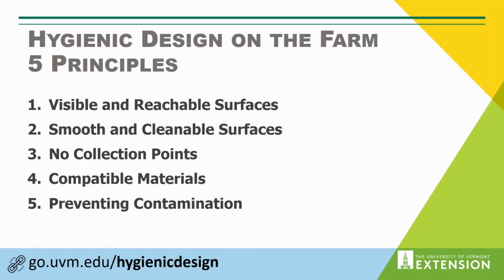Four, compatible materials. Oftentimes the equipment that's made is not made with materials that are going to be compatible with the cleaners or sanitizers or even the food products that we're using the equipment for. So we're going to take a look at materials that are compatible for the use. Five, preventing contamination. This one is sort of a catch-all for a lot of best practices that help prevent contamination fundamentally from occurring in the first place. It's thinking about how our buildings are oriented, where the doors might be, where people or product might flow through the building, and thinking about that flow in a really intentional way to prevent cross-contamination.